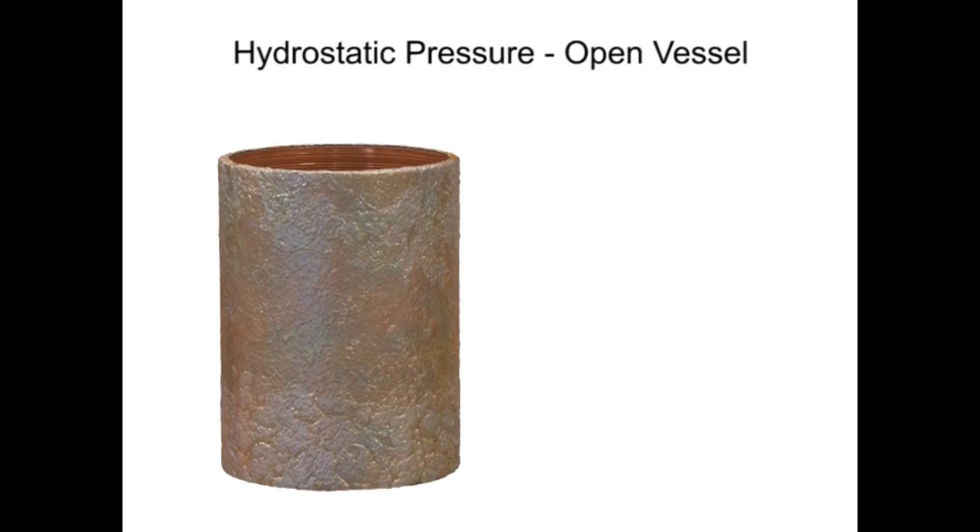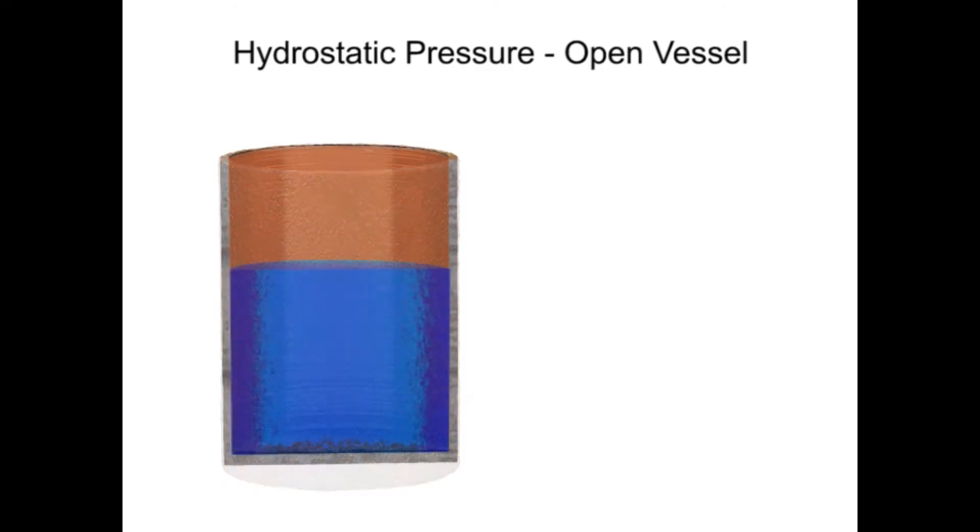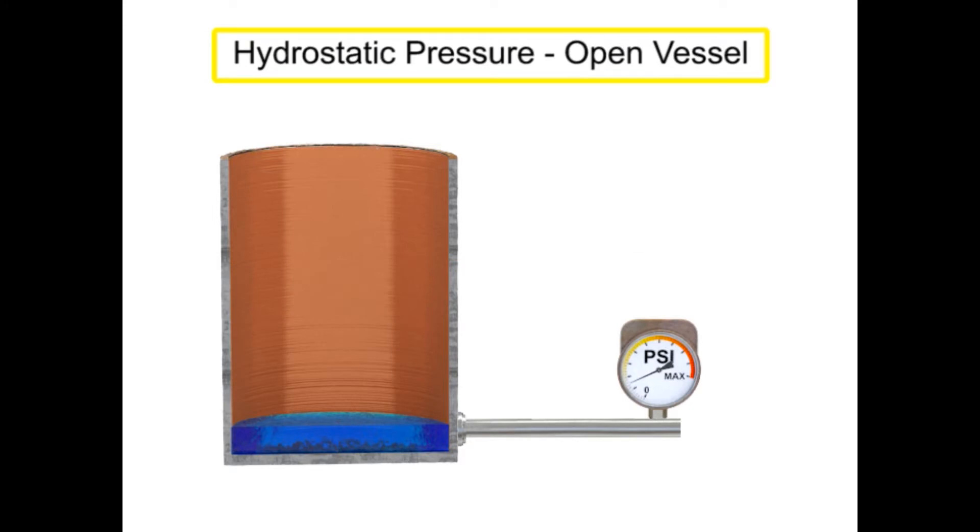The pressure exerted by a fluid material in a vessel is directly proportional to its height multiplied by its density. Hydrostatic pressure, or head pressure, is the force produced by a column of material. As the height of the material changes, there is a proportional change in pressure.